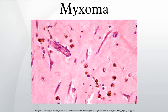Myxomas are usually located in either the left or right atrium of the heart. About 86% occur in the left atrium. Myxomas are typically pedunculated, with a stalk that is attached to the interatrial septum. The most common location for attachment of the stalk is the fossa ovalis region of the interatrial septum.